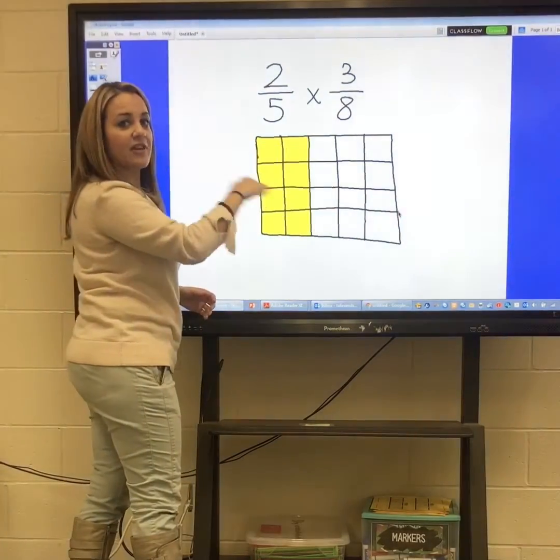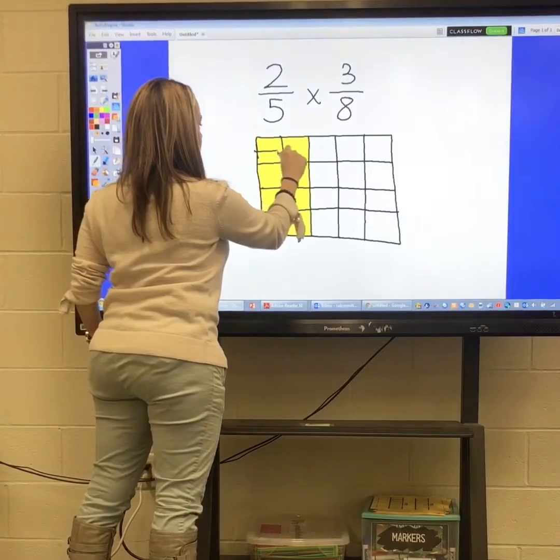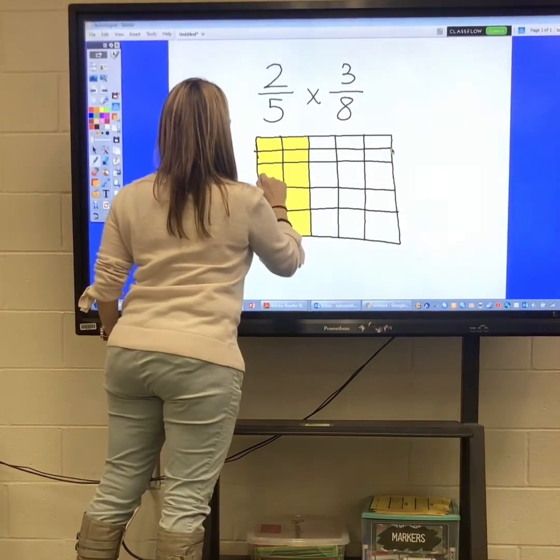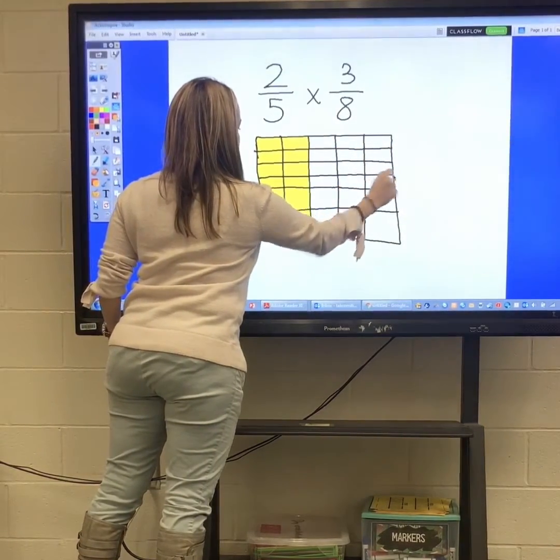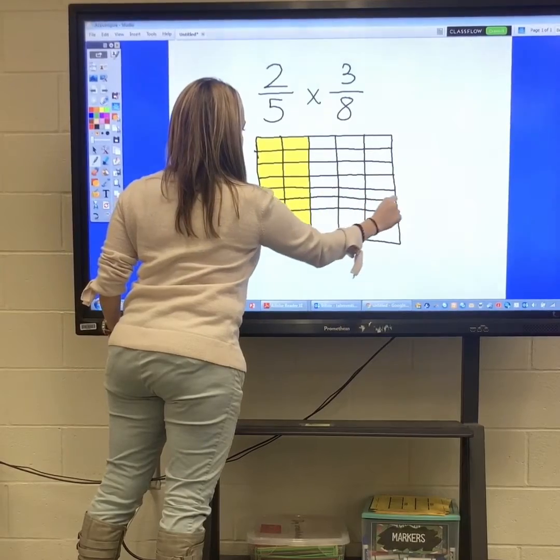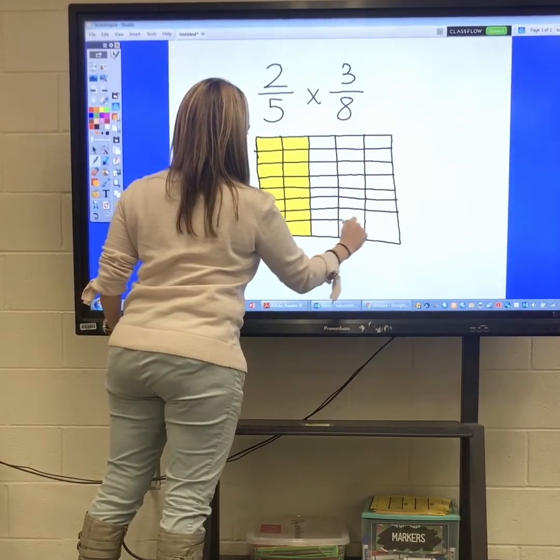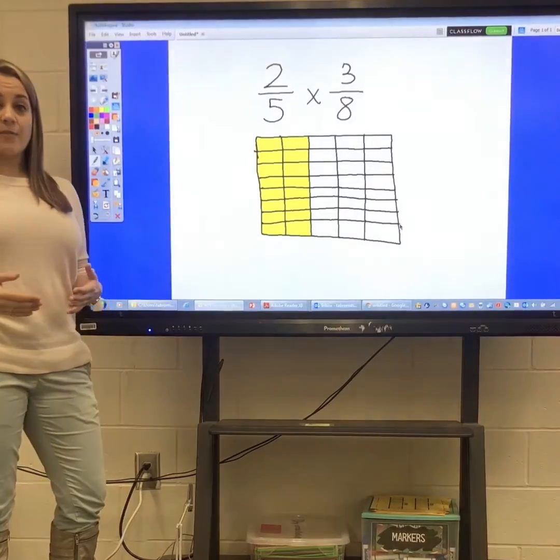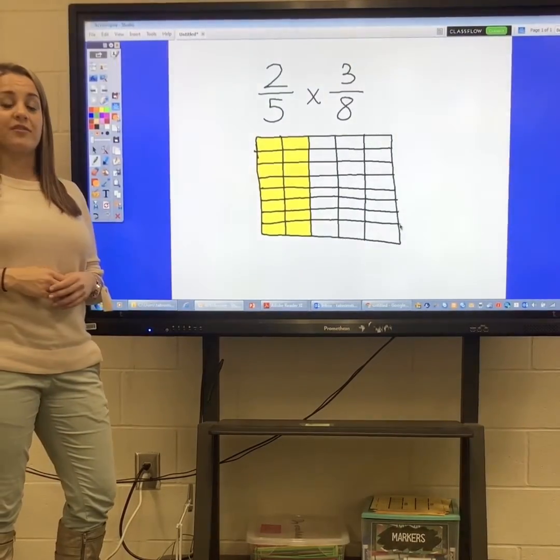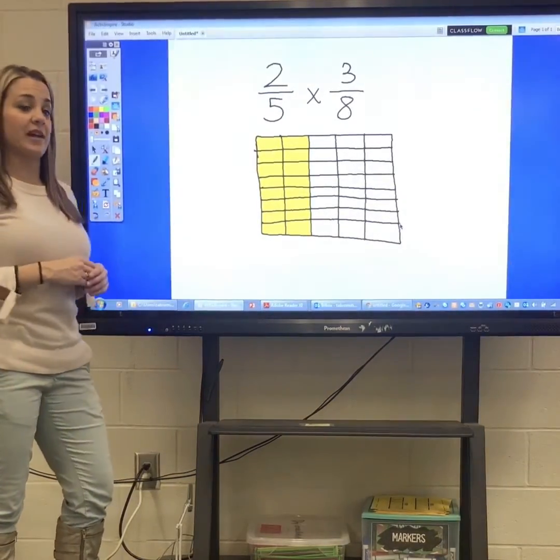I like to split it in half, and then in halves from there. Now that I have my 8 rows, I'm going to fill in 3 of them with a color that will blend with my yellow.